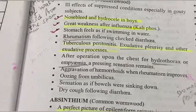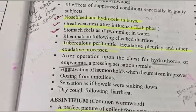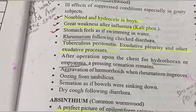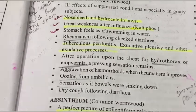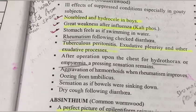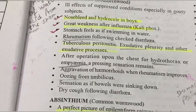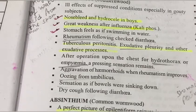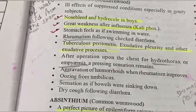Today's topic is Abrotanum, its common name is southern wood. The first symptom of Abrotanum is its effect on suppressed conditions, especially in gouty subjects. In suppressed conditions, gouty rheumatism may develop.